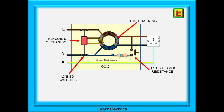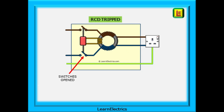Every RCD device will have a test button. Pressing this button puts a known fault current on the device that imbalances the toroidal core and simulates a fault. When the RCD detects a fault current above its preset value, the trigger mechanism will operate in fractions of a second and open the switch contacts, isolating the downstream parts and making the user safe.